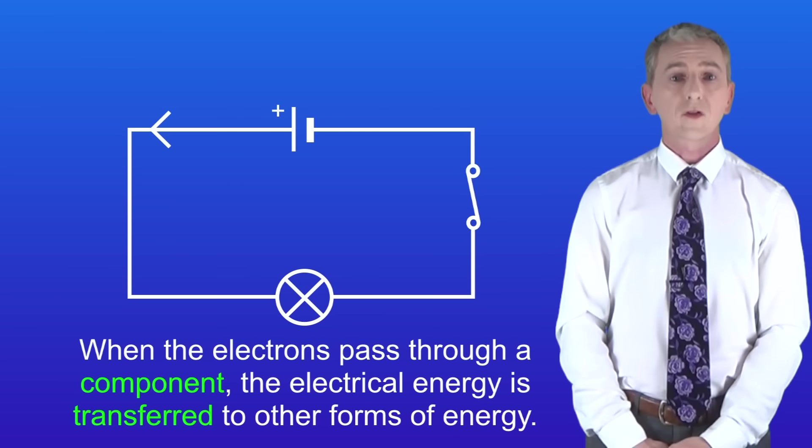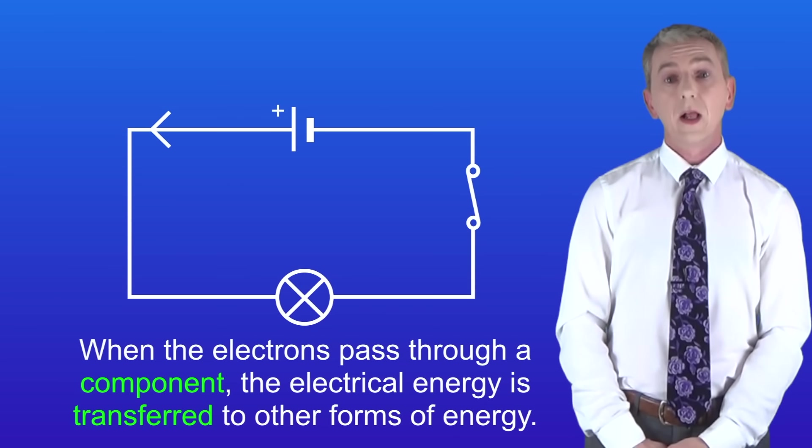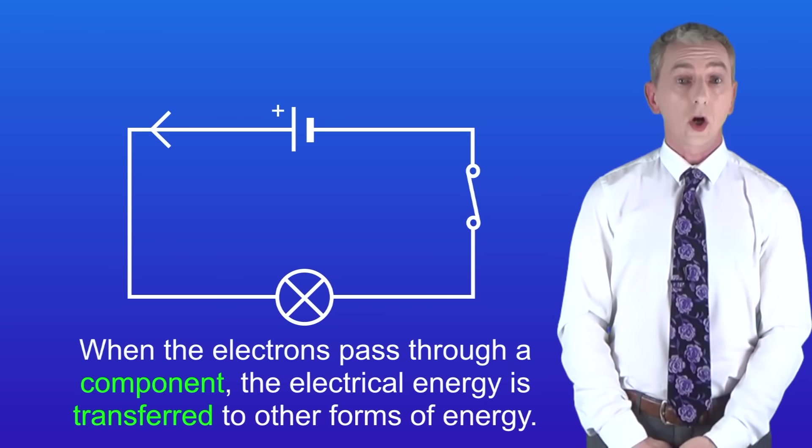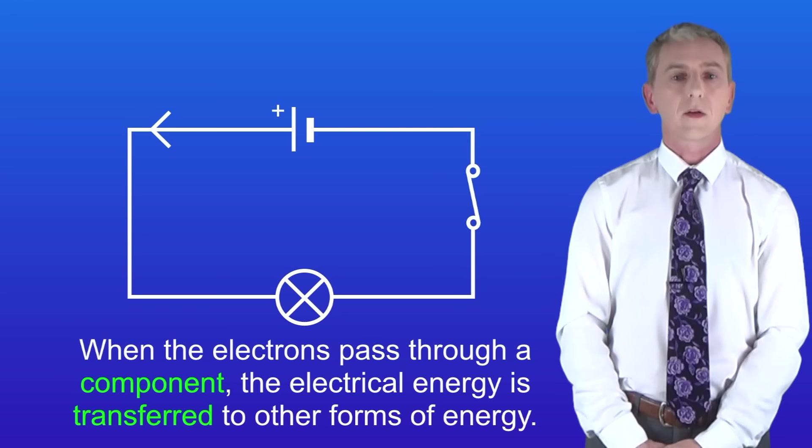When the electrons pass through a component such as a lamp, the electrical energy is transferred to other forms of energy such as light and thermal energy.